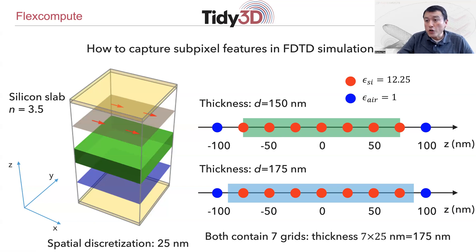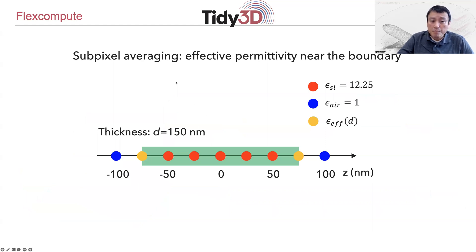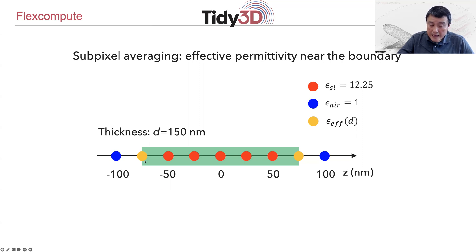For FDTD, it would certainly be nicer if you could develop a scheme so that the dielectric function distribution takes into account the fact that the thickness in general need not be an integer multiple of the discretization. And that's where the idea of subpixel averaging comes in. In subpixel averaging, what you do is look at the pixel in the vicinity of the material boundary, and then assign the dielectric constant at this boundary in a way that takes into account where the boundary actually lies within the unit cell.